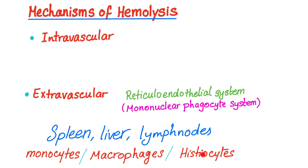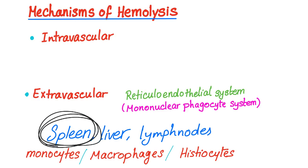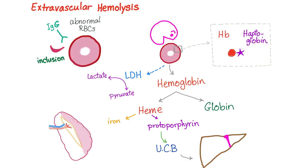The mononuclear phagocyte system includes the spleen, liver, and lymph nodes. The cells that phagocytose are monocytes, macrophages, and histiocytes — there's a very slight difference among them. Extravascular hemolysis will occur in the spleen, liver, or lymph node, but the most common site is the spleen.